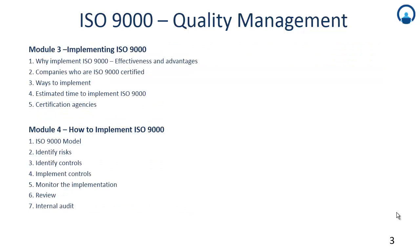Module 3 is about implementing ISO 9000 standards: how does a company implement the standard, why does a company implement a standard, what is the effectiveness and advantages of implementing this particular standard. We will have a look at the companies who have been ISO 9000 certified, the different ways a company can implement the 9000 standards, the estimated time a company would typically need, and what are the certification agencies.